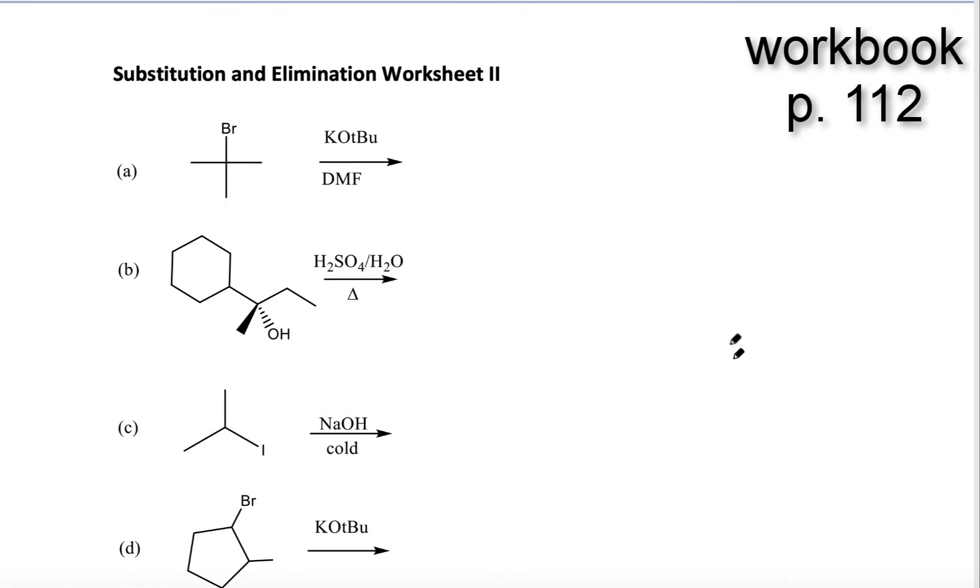Hey everyone. I think one of the confusing things for everyone is just trying to get straight the SN1 versus SN2 versus E1 versus E2. So I just wanted to make a quick video working through some of the problems and maybe that will help clarify how to think about these.